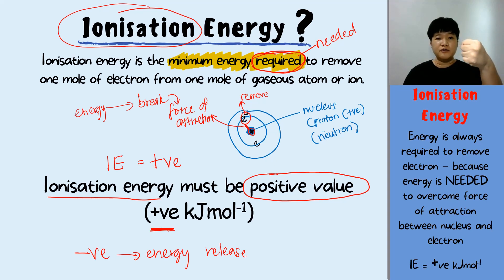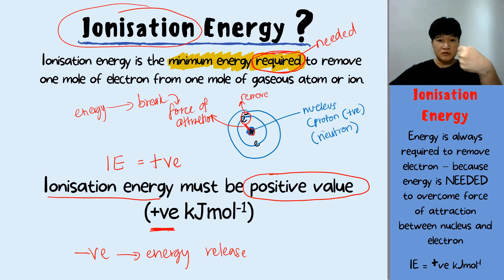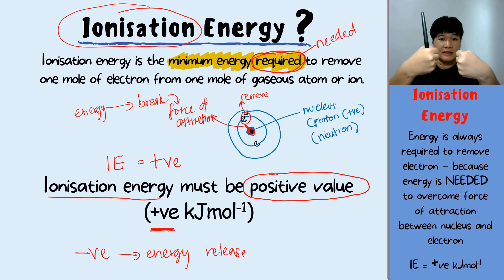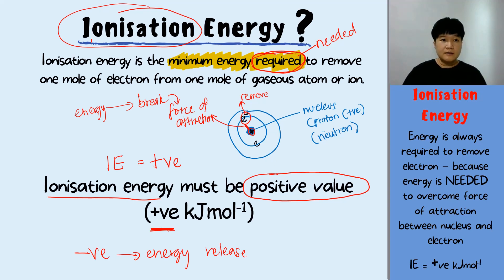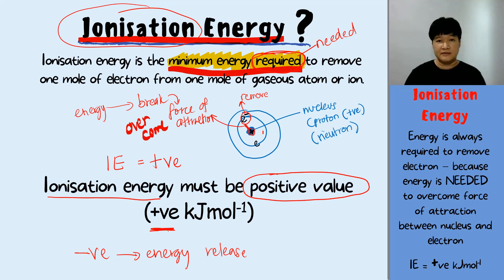It's basically simple. You have your nucleus with protons — positive charge — and your electron with negative charge. There is a force of attraction between them. To remove the electron out of the shell and overcome this force of attraction, you need energy. You absorb energy so that the electron has enough energy to overcome the force of attraction and move away. That's why ionization energy is always the minimum energy required.